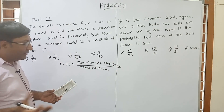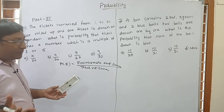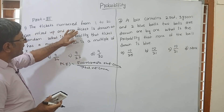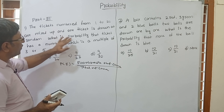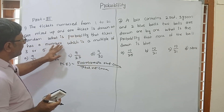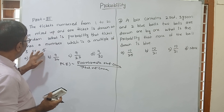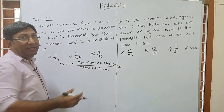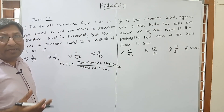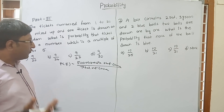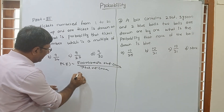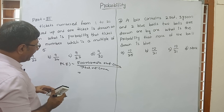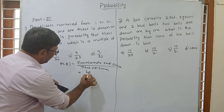Ticket numbers from 1 to 20 are mixed up and 1 ticket is drawn at random. We need a number which is a multiple of 3 or 5. From 1 to 20, how many numbers are divisible by 3? The technique is: 20 divided by 3 gives 6-point-something, so we take only 6.